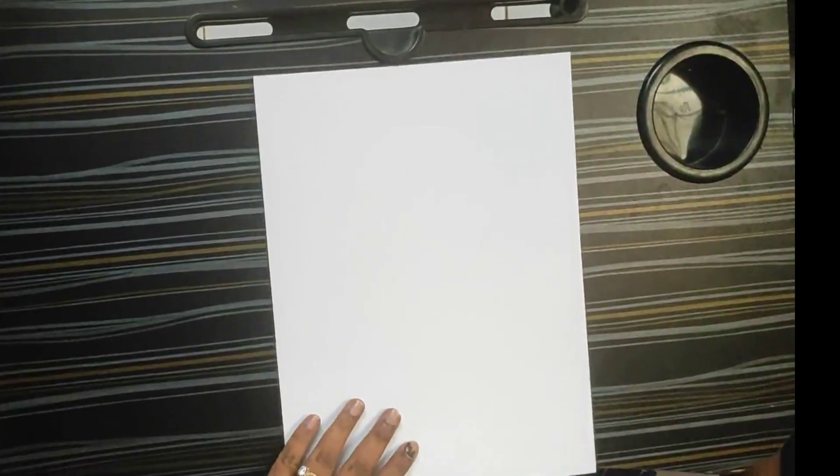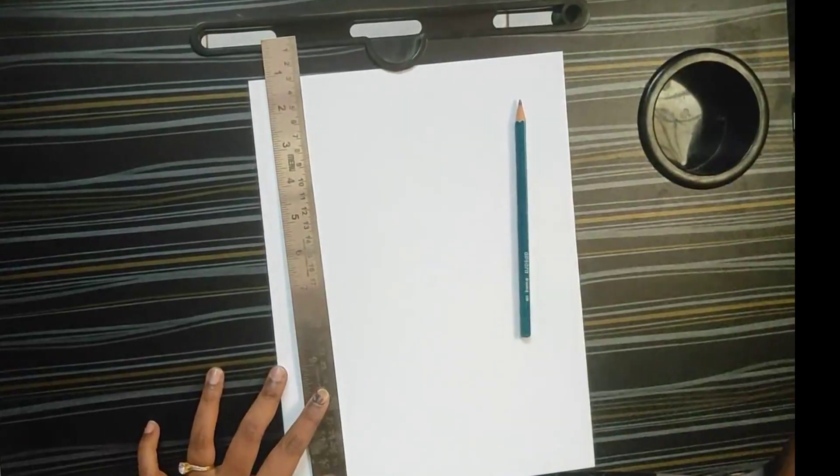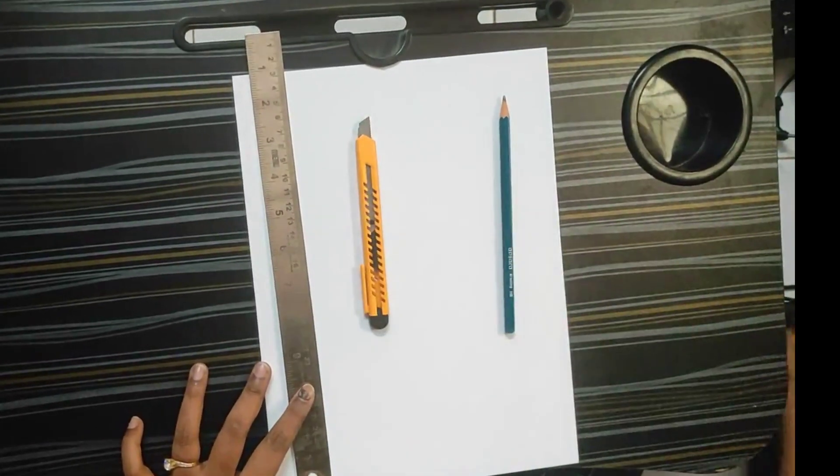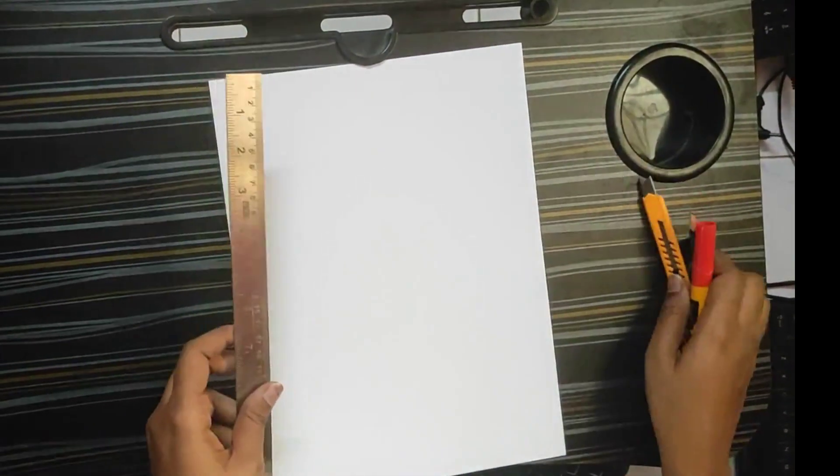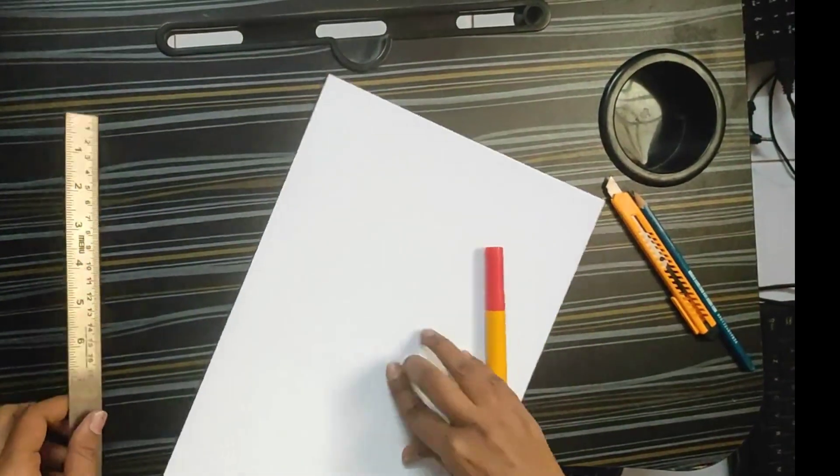For making reading cards, I have taken a 300 GSM sheet, a ruler, a pencil, a knife and a red color marker. The marker which I am using has a chisel bolt tip which is ideal for writing.